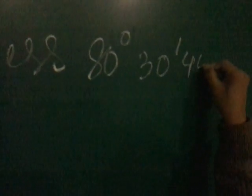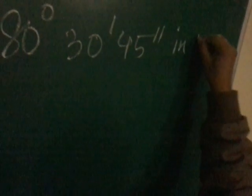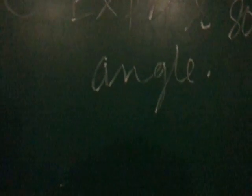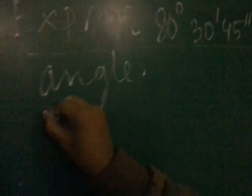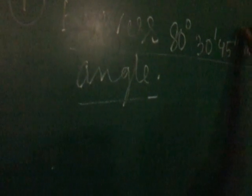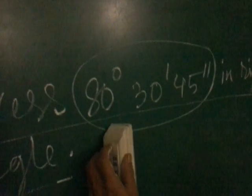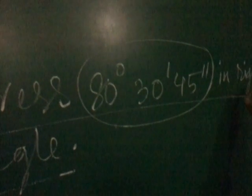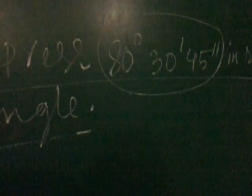80 degree, 30 minute, 45 second in right angle. So, how we can express in this form? That means it is in the form of sexagesimal form — we have to transform this form into right angle form. How we can do it?